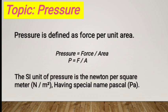So P equals F divided by A. That is the pressure equation. The SI unit of pressure is newton per square meter, which has a special name called Pascal.